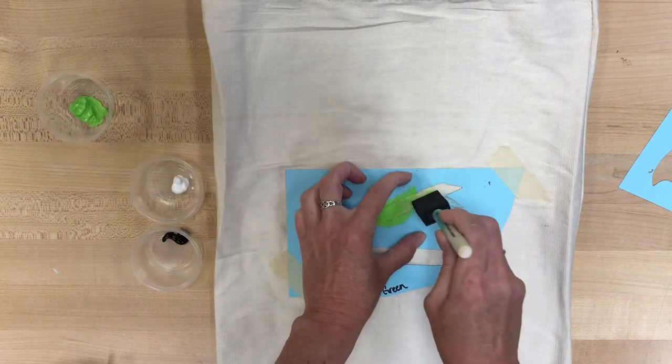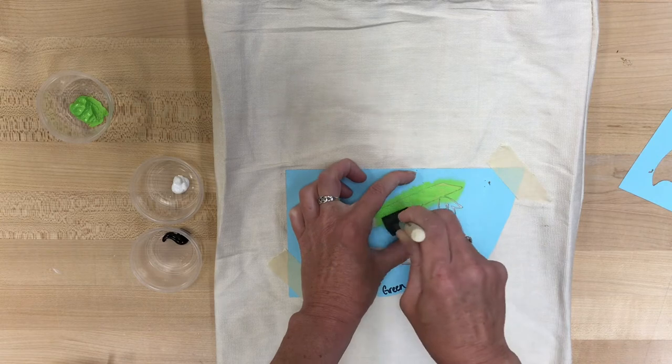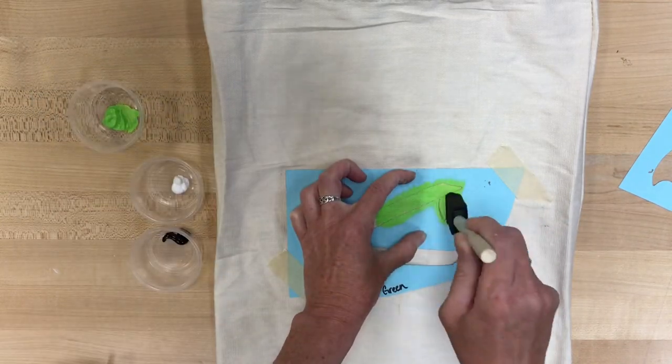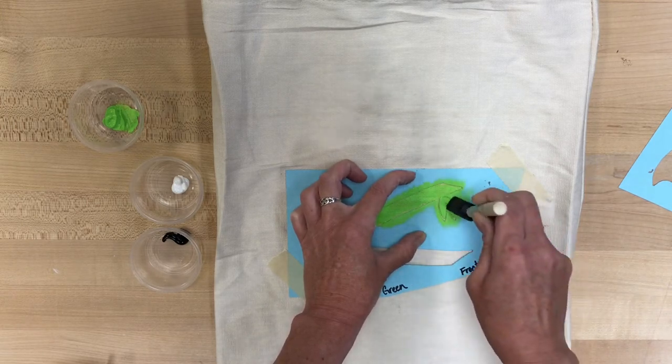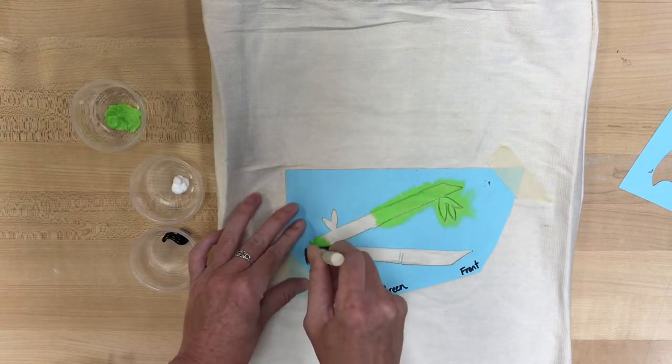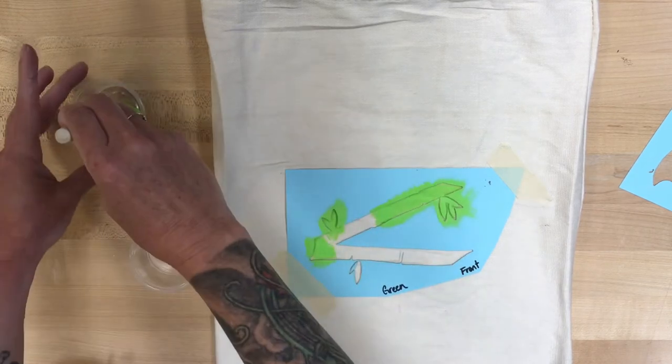Because you don't want the paint to sneak under the edge of the stencil, you only want it to go where the hole in the stencil is. And you want to make sure that you are pushing hard enough that the paint gets deposited on the bag and goes right to the edge of the stencil, but don't put on so much paint that it has to blurb itself underneath the stencil.